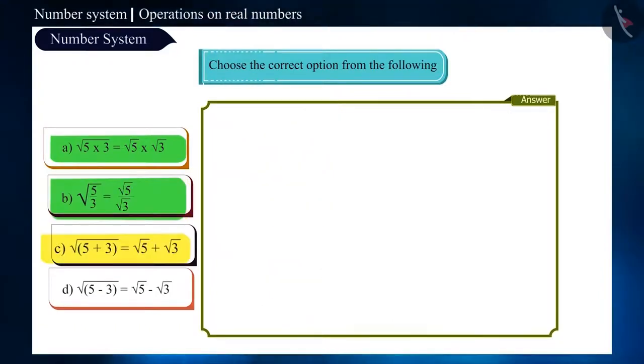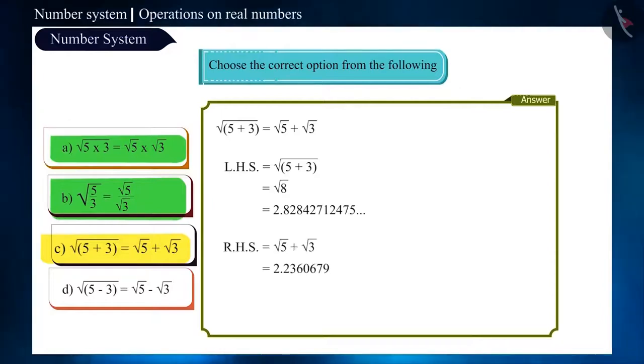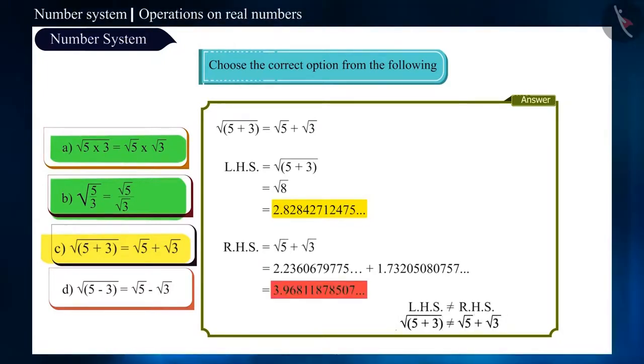Let us repeat the same process in option C and find the values to check. You can see the value of root of 8 is not equal to the value of root of 5 plus root of 3. Therefore, this option is incorrect.